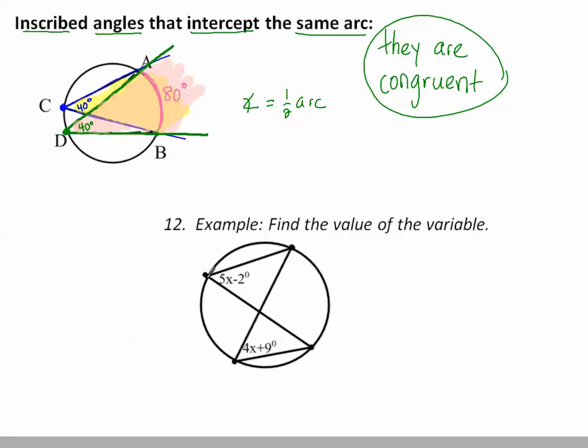Find the value of the variable. Here's an angle. I'm going to trace the sides. If I do my little highlighter trick and shine my flashlight, I can see the arc intercepted. Well, here's another inscribed angle. Notice that it's hitting at exactly those two same end points. So I know this angle has to be congruent to this angle. 5x minus 2 has to equal 4x plus 9, and then we solve.